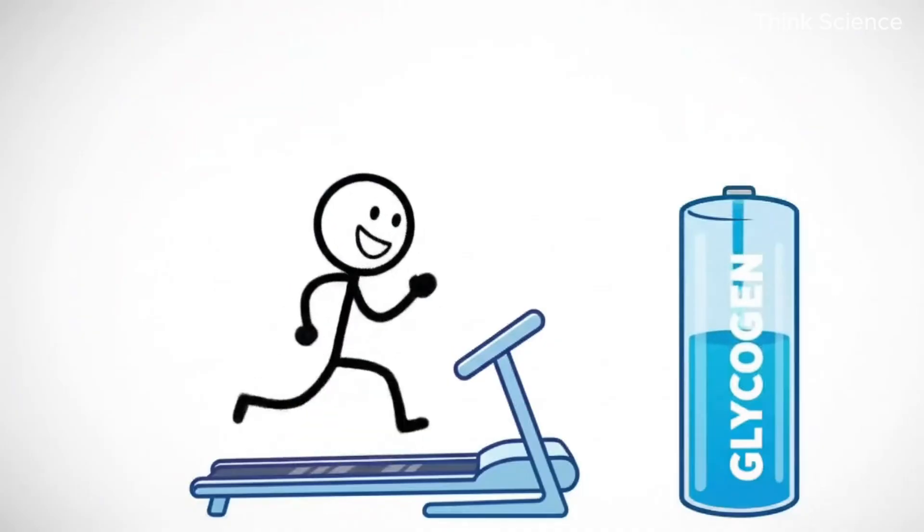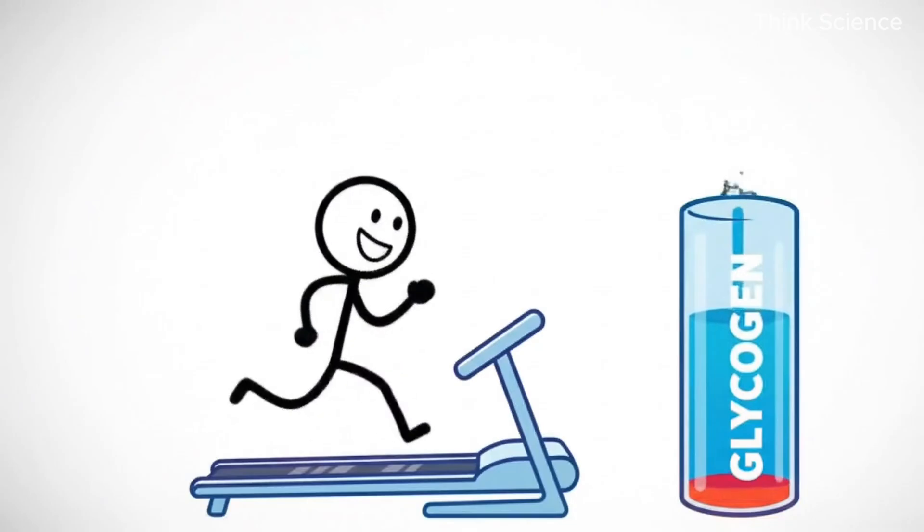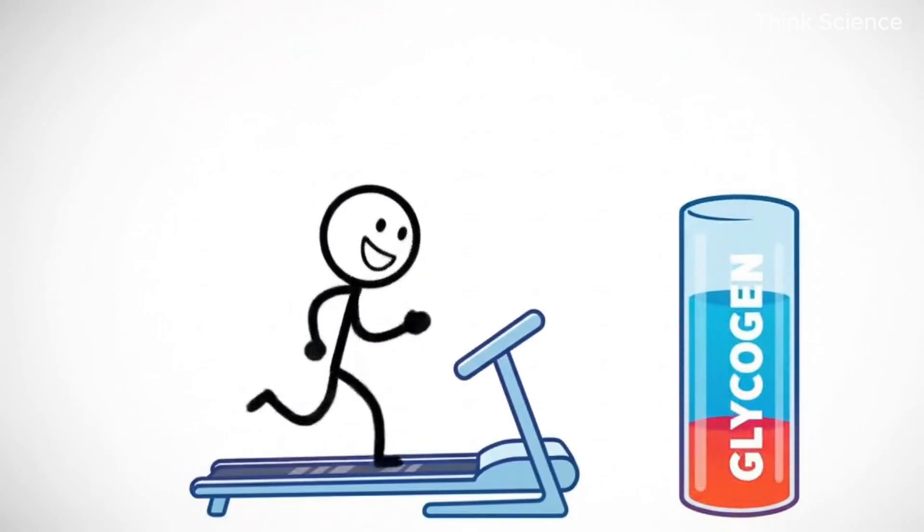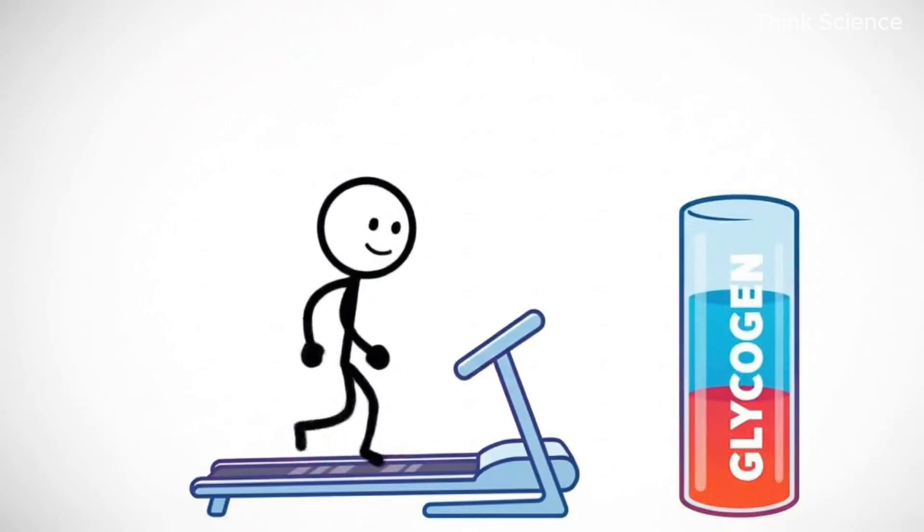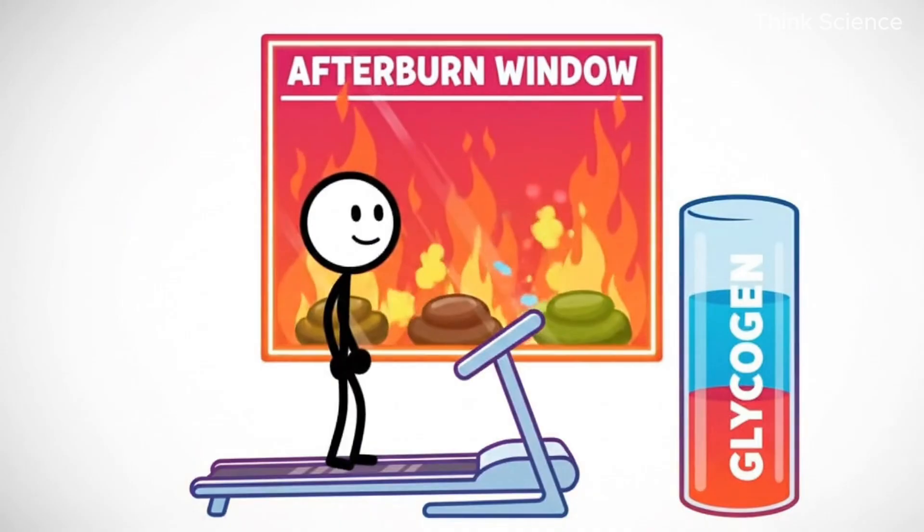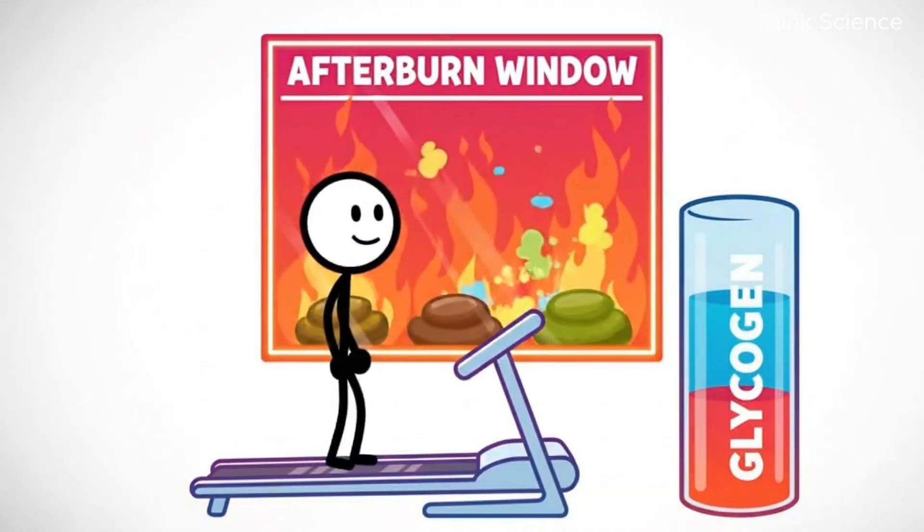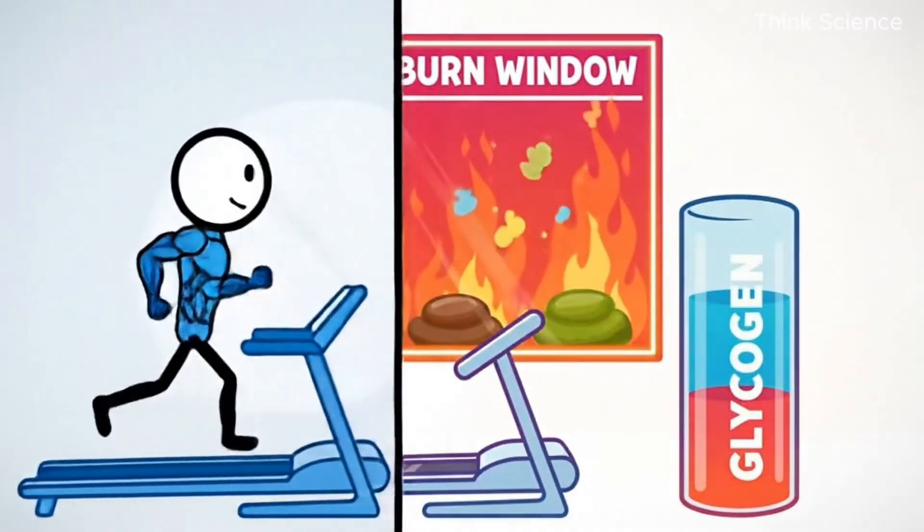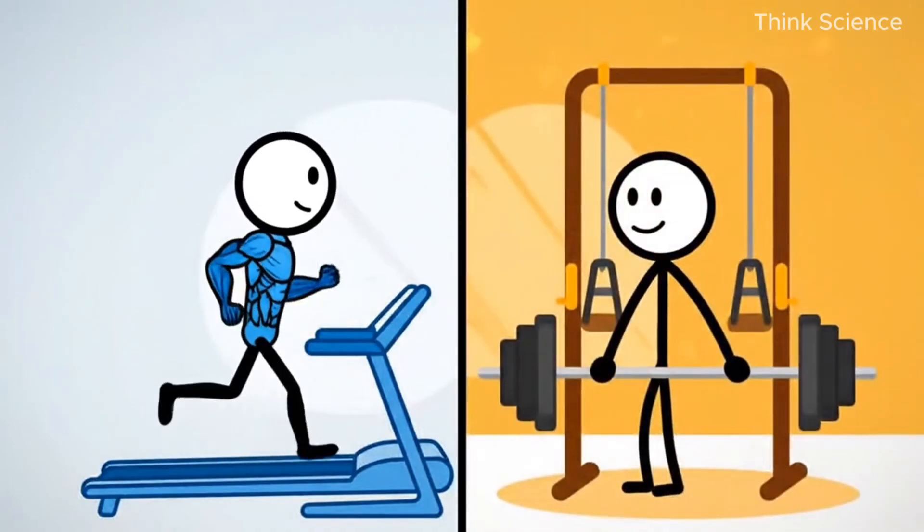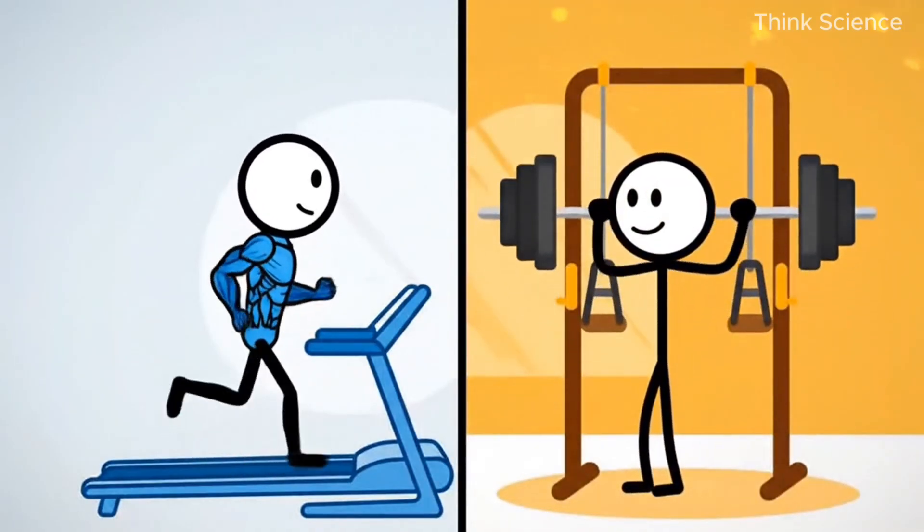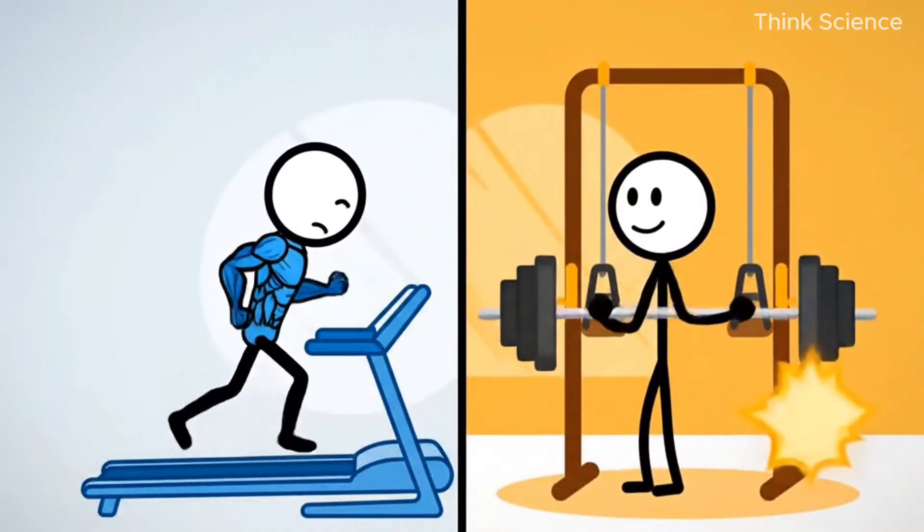Let's finally bring exercise into the story, but in a way that actually makes sense. Cardio drains glycogen and creates an afterburn window, where your body aggressively burns fat to restore itself. But heavy cardio alone won't protect muscle. Strength training does that, preserving your metabolic engine so you burn more calories at rest.